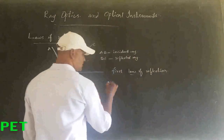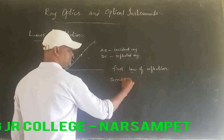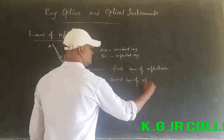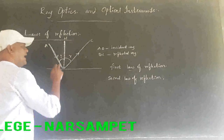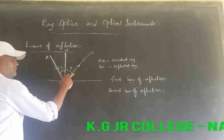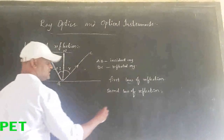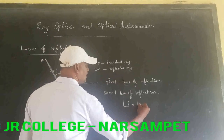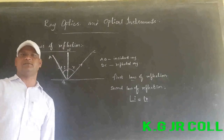The second law of reflection states that the angle of incidence is equal to the angle of reflection. Simply: angle of incidence equals angle of reflection. This is the second law of reflection.